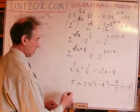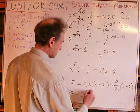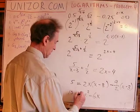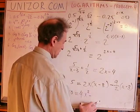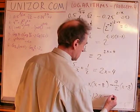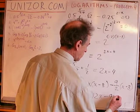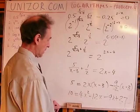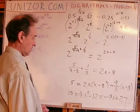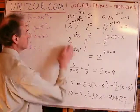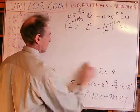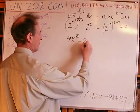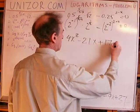We multiply through by 2, giving 10 equals 2x squared minus 6x — then further expanding: 4x squared minus 21x plus 17 equals 0. Simplifying, we get the quadratic 4x² minus 21x plus 17 equals 0.